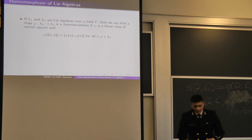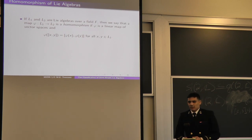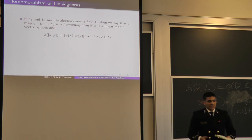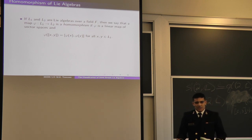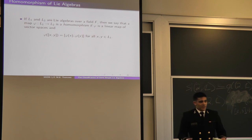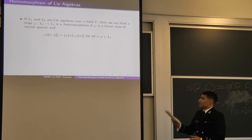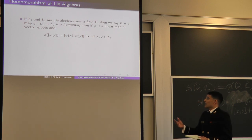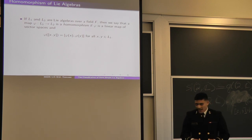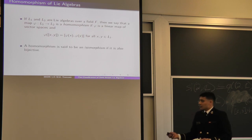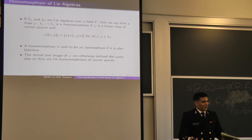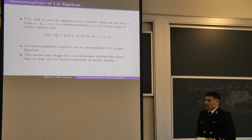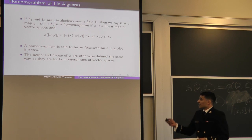We want to describe isomorphism classes for semi-simple Lie algebras, so it makes sense to talk about what a homomorphism of Lie algebras is. It is essentially the same as a vector space homomorphism with the extra property that it preserves the Lie bracket: φ([X, Y]) = [φ(X), φ(Y)] for all X and Y in L. An isomorphism is a bijective homomorphism, and the kernel and image behave as you would expect for vector spaces.